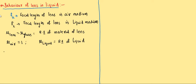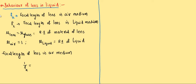To find the focal length of the lens in air, we write: 1/FA = (n_air_lens - 1) × (1/R1 - 1/R2). This is the lens maker formula: 1/F = (n - 1)(1/R1 - 1/R2).